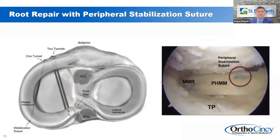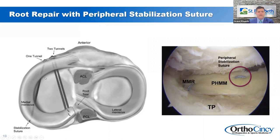Regarding peripheral stabilizing sutures: looking from the top down on the tibia, in addition to our traditional single or double tunnel repair, pullout sutures can be placed. However, there is limited evidence that this will help. It's technically much more demanding and is not really standard of care right now, and it doesn't change anything with the rehab protocols.